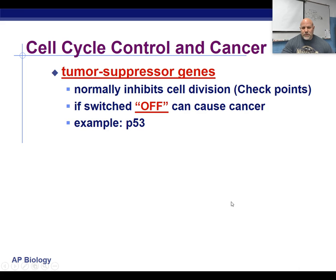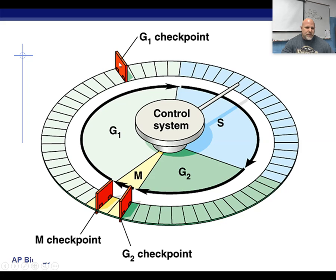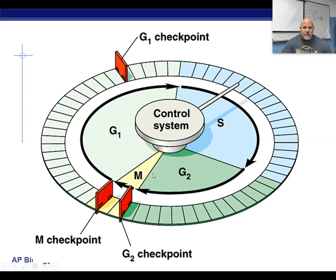Another thing that happens with all tumors is we have certain genes that are involved in making sure mitosis happens properly. There's a G1 checkpoint where all of the DNA gets checked before we replicate the DNA. There's a checkpoint 2 where we make sure the replication process happens properly, and there's an M checkpoint. All of these checkpoints are involved in making sure mitosis happens properly. If you get a mutation in one of these, then perhaps we could replicate bad DNA or not check to make sure replication happened properly.